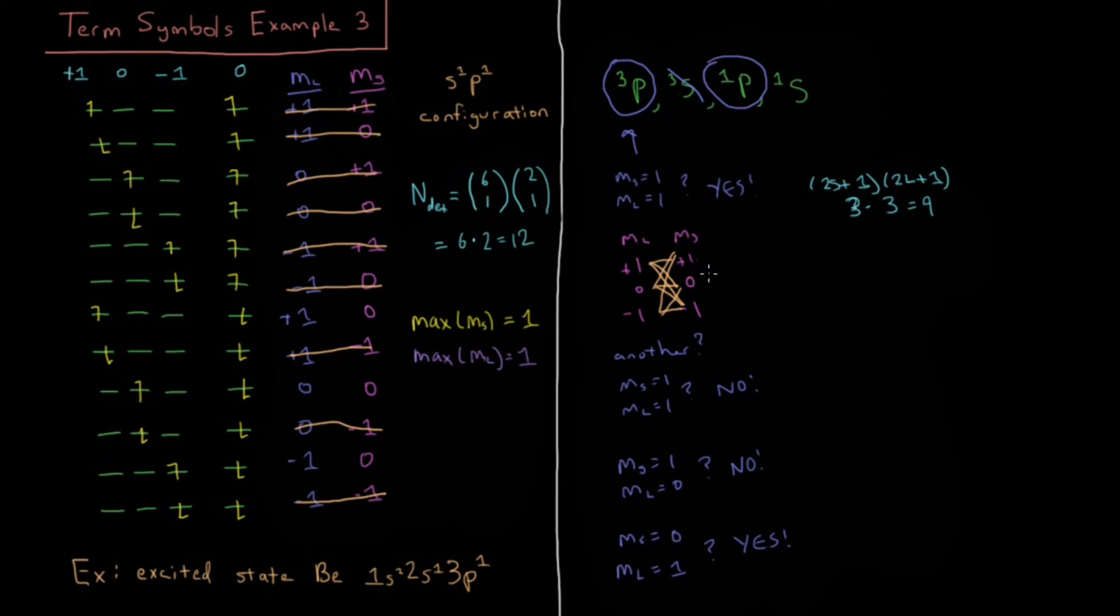The determinants that we need to find, they're going to be 3. 2s plus 1 times 2l plus 1 is going to be 1 times 3 for this case, which equals 3, which is convenient because out of the 12 that we originally had, we've crossed out 9, so now we have 3 left. We have m sub l values for l equals 1 of plus 1, 0, and minus 1. M sub s for a value of s equals 0 is going to be 0.